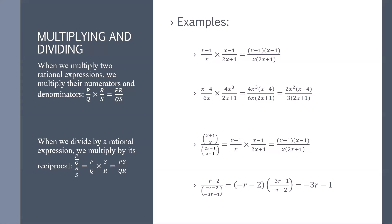Finally, negative r minus 2 divided by negative r minus 2 divided by negative 3r minus 1. Again, we flip and multiply. We have negative r minus 2 times negative 3r minus 1 divided by negative r minus 2. The negative r minus 2 cancels, and we're left with negative 3r minus 1.